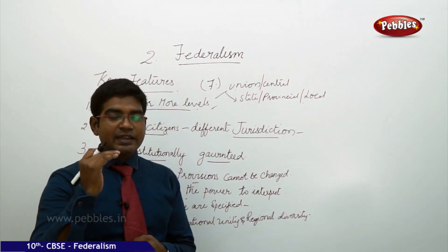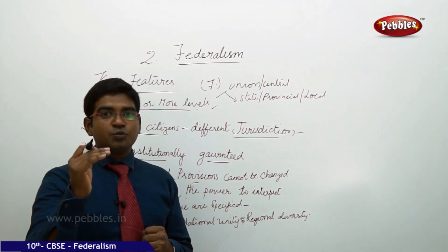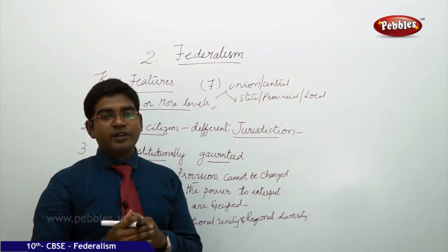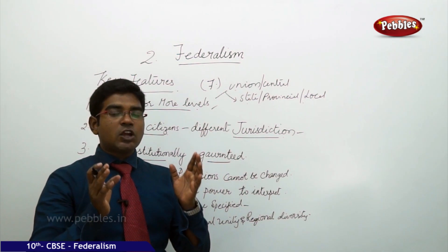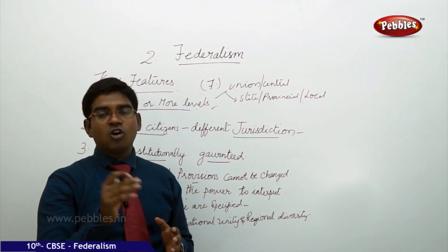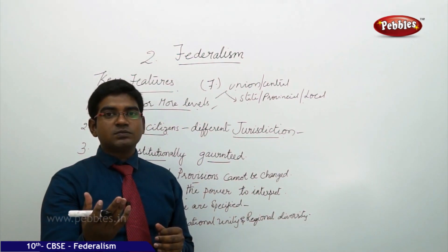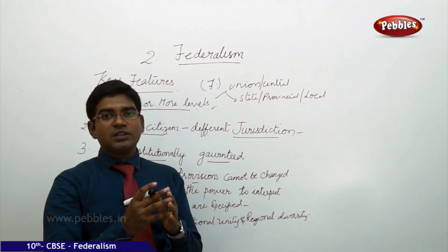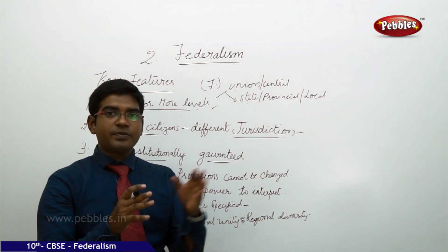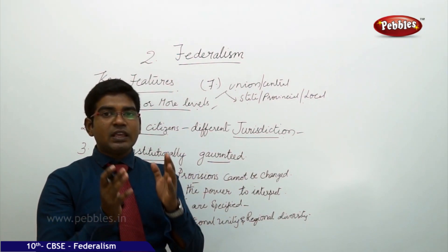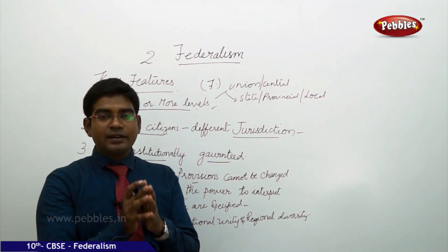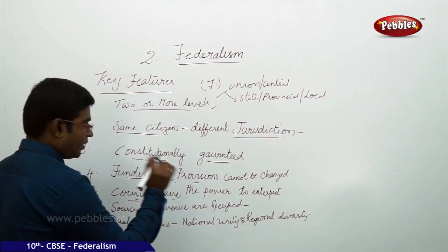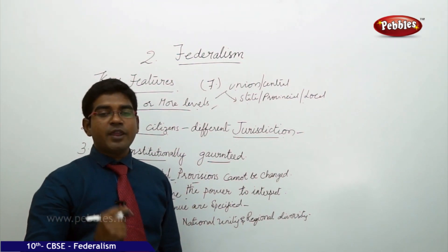Then we also have the courts. India has the setup of an independent judiciary. The apex court at the state level is the High Court, while at the union level it is the Supreme Court. When laws framed either by the state government or the union government are contrary to the interests of people or individuals, they can approach the court through public interest litigation. The courts — whether the High Court at state level or the Supreme Court at union level — can interfere in the law matters of governance and sometimes make those laws null or void.